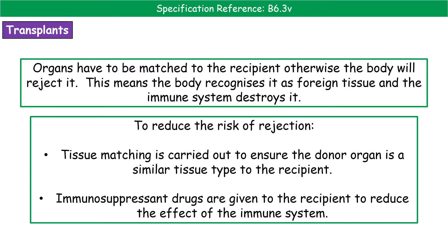To reduce the risk of that organ being rejected, we carry out a process called tissue matching first of all. That makes sure that the donor organ is a similar tissue type to the recipient, so it minimises the risk of the immune system recognising it as foreign. We also use drugs called immunosuppressants, which reduce the effectiveness of the immune system.